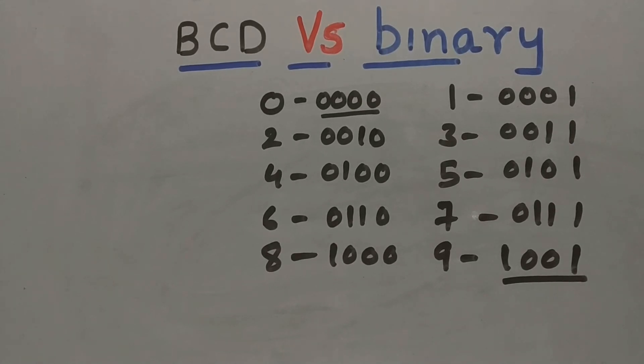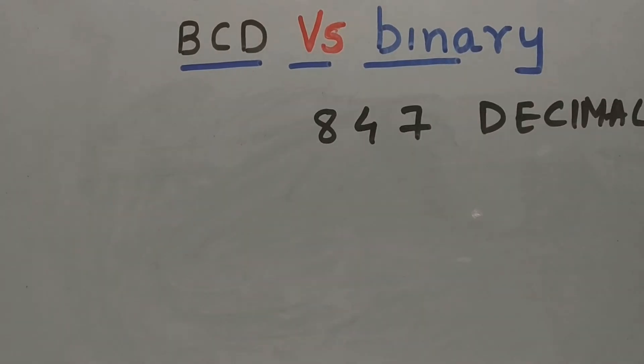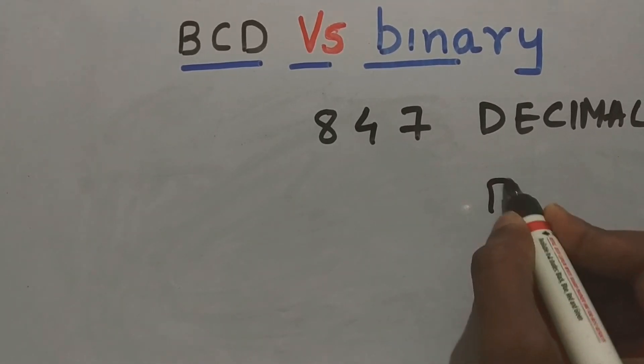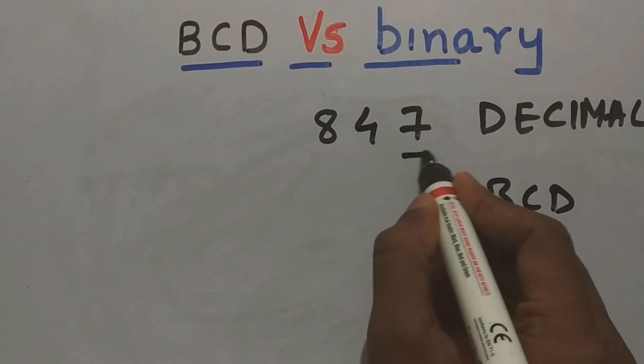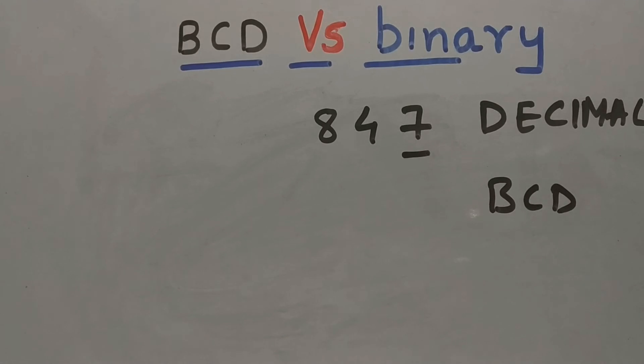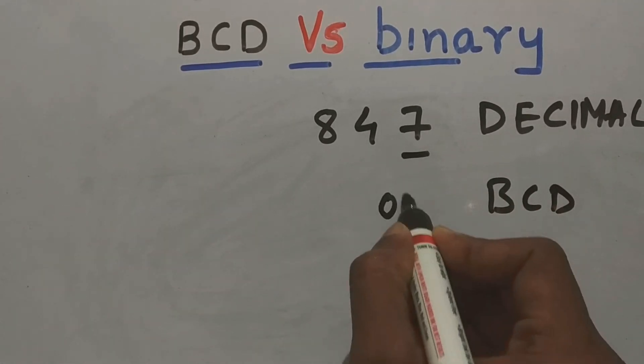For representing a single decimal digit, we are considering 4 bits. So let us consider this decimal number 847 and how it is represented in BCD. Each digit is represented by its 4-bit code in binary. 7 is represented as 0111. 4 is represented as 0100.